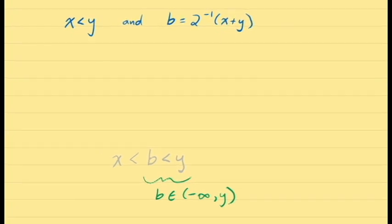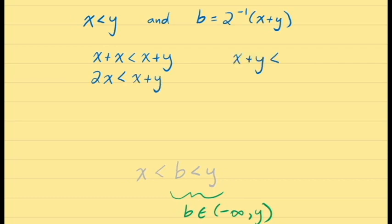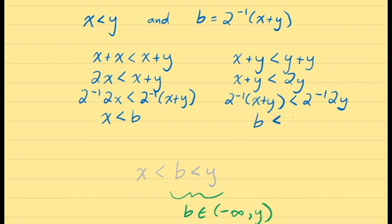We've done this sort of demonstration before. Starting with x < y, on one hand we add x to both sides giving 2x < x + y, and on the other hand we add y to both sides giving x + y < 2y. Multiplying both sides of each inequality by 1/2: the first gives x < (x + y) / 2, which is our value of b; the second gives (x + y) / 2 < y, which is again the value of b. These are exactly the two inequalities we're looking for.